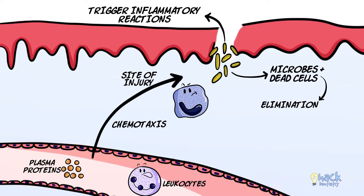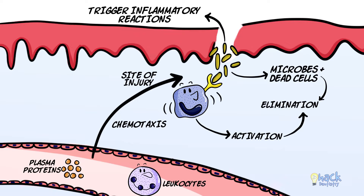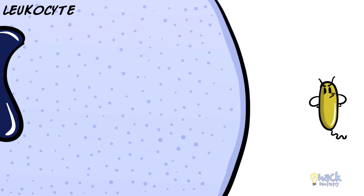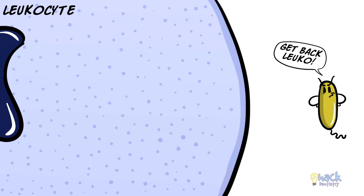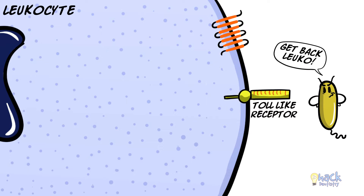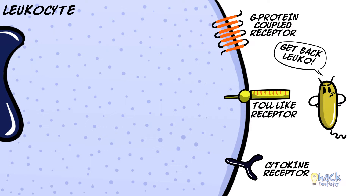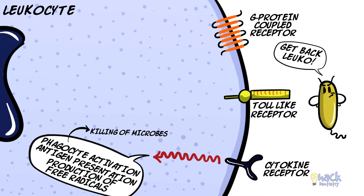Once in the site of infection, leukocytes have to recognize the offending agents in order to be activated and to eliminate them. Leukocytes possess numerous receptors for recognizing external agents, some of them being toll-like receptors and G-protein coupled receptors. They also possess receptors for other proteins like cytokines, which could activate them to start the cleansing process.